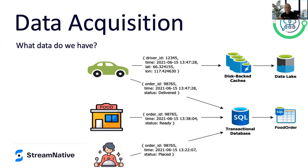We also have the drivers with their mobile apps providing real-time information around their positioning, which goes into real-time caches and eventually into a data lake for further analytics. We also capture when they acknowledge an order, when they're en route to pick it up, when they've picked up the order, and when they've delivered it. So all that goes into two large data sources — a data lake with some caches in front of it, and a transactional database to track the food order itself.